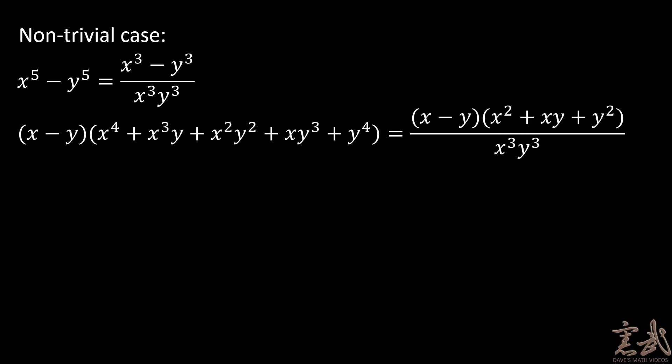I can factor both sides and I would get the quantity x minus y times the quantity x to the fourth plus x cubed y plus x squared y squared plus x y cubed plus y to the fourth. And this is equal to the quantity x minus y times the quantity x squared plus xy plus y squared over x cubed y cubed.